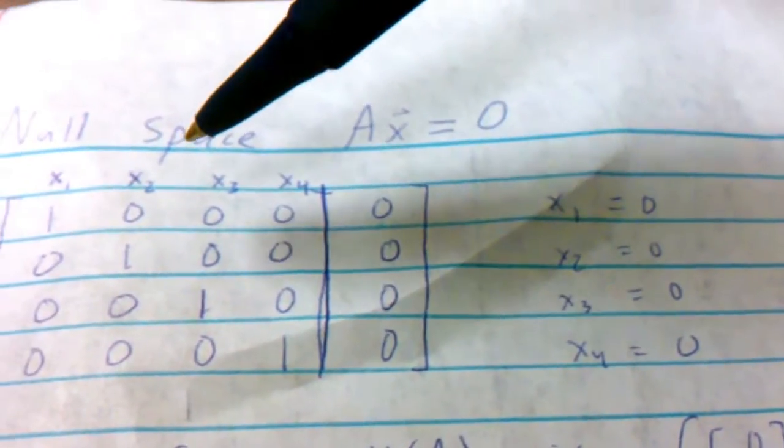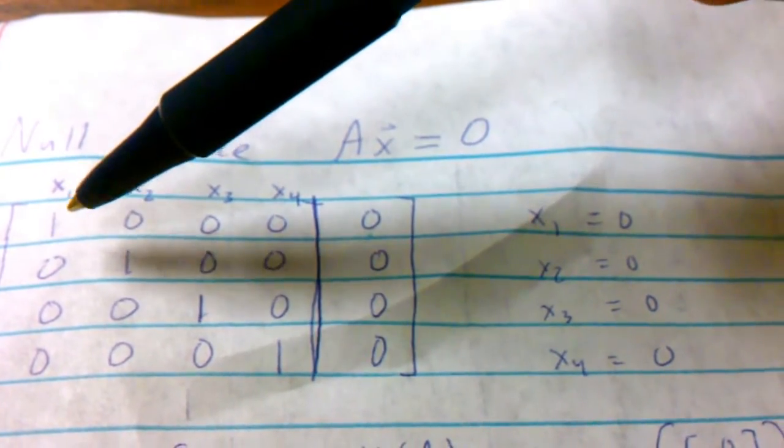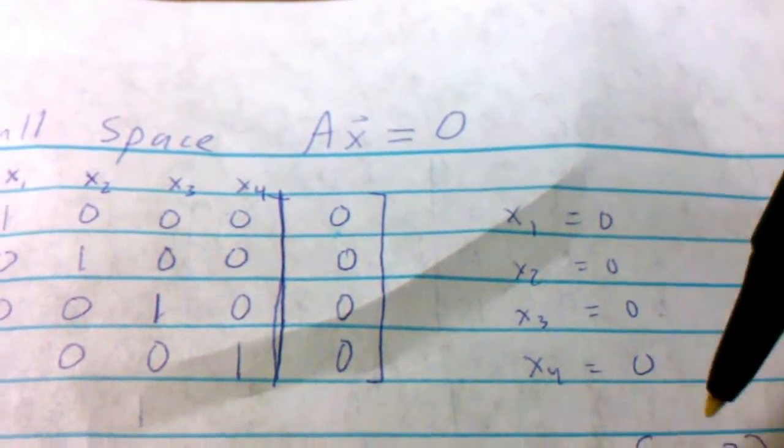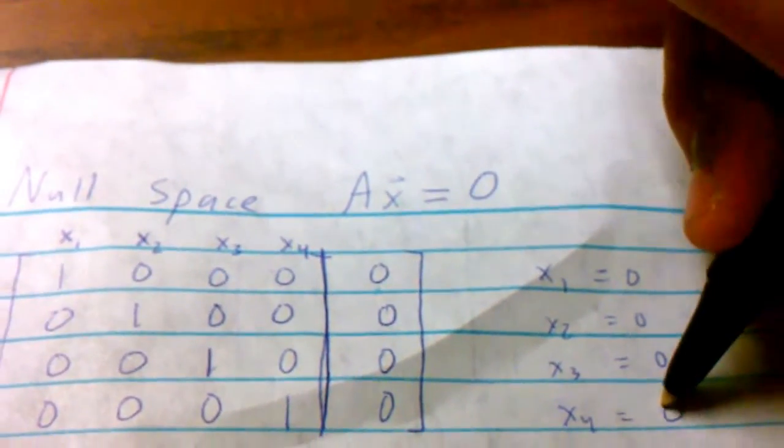So as you can see here, x of 1, which is one value, equals 0. 2, 3, 4. So they all equal a vector of 0. And that is it.